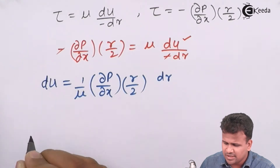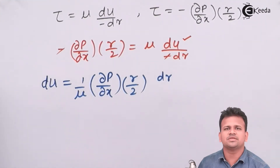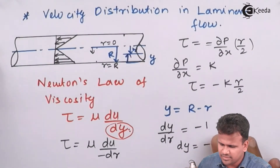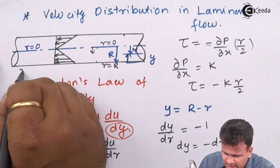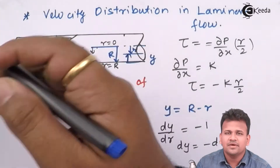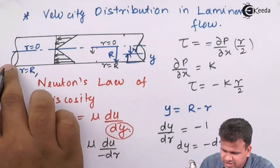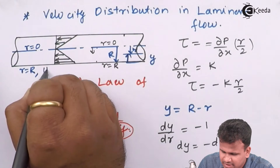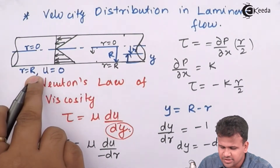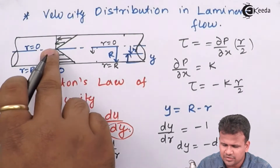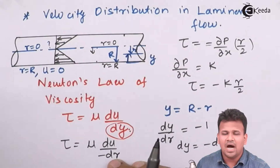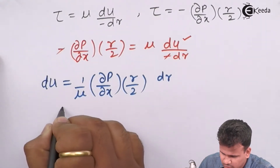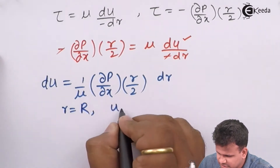To solve this differential equation, we need boundary conditions. From the diagram, the boundary conditions are in terms of small r: r equals 0 and r equals capital R. We know that at the pipe wall, the fluid velocity is zero — the no-slip condition. So at r equals capital R, velocity equals 0. We need to find the velocity at r equals 0.